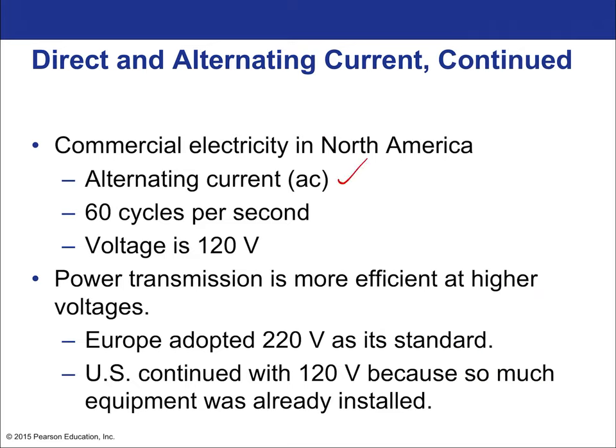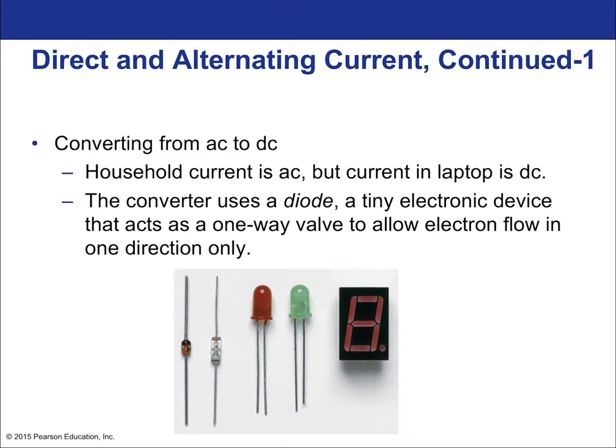Commercial electricity in North America is alternating current at 60 Hz, with a voltage of 120 V. Power transmission is more efficient at high voltages. Europe uses 220 V, but the US continues to use 120 V because the equipment is already installed. If you want to convert from AC to DC, you need a rectifier to change your current from one type to another. You can also have a transformer to change the voltage. Most devices that need DC, like computers, will have both a transformer and a rectifier.